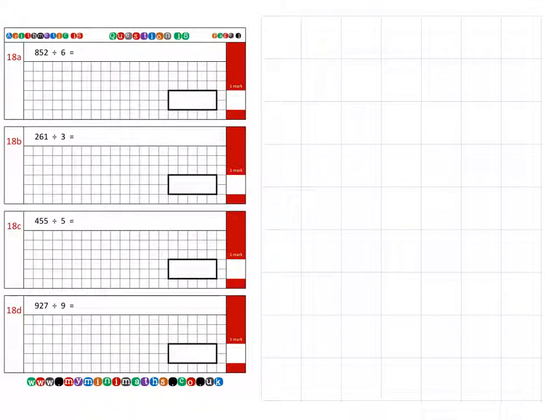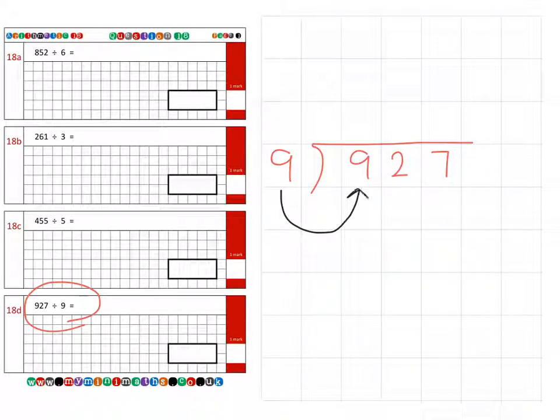Finally for today, we're looking at question 18d, which is 927 divided by 9. First of all, how many nines fit into 9? Well, that's nice and easy, that's 1. How many nines fit into 2?